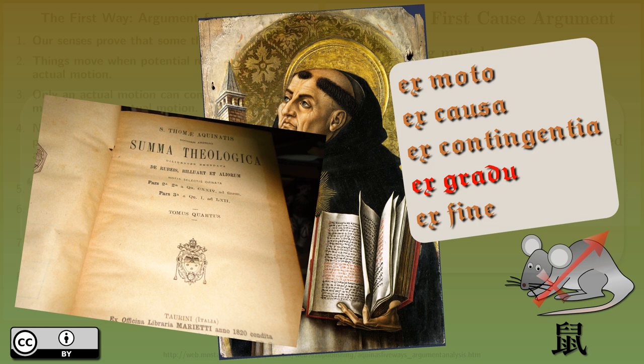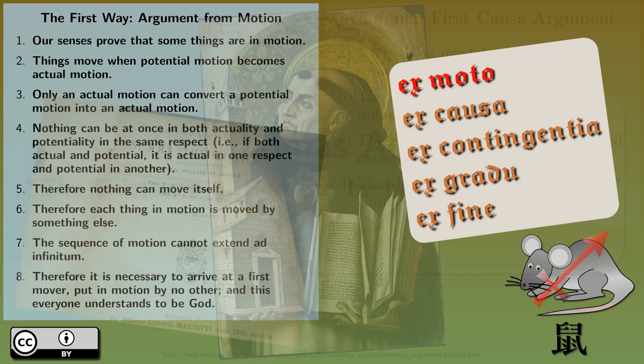The fourth way by Aquinas, the argument from gradation of being, is an argument that I have not seen much everywhere, while the fifth way, the argument from design, is also a common argument, but I will focus today on the first way.